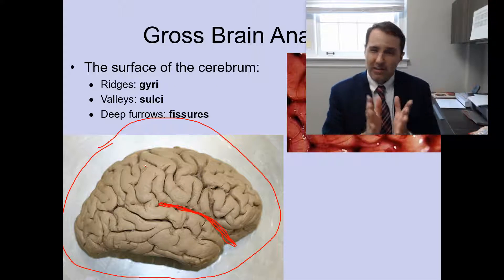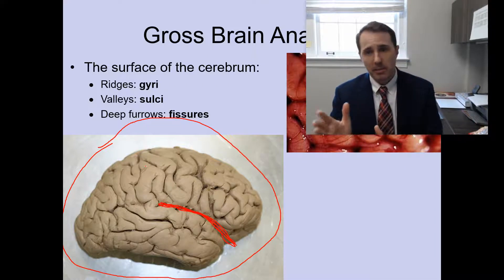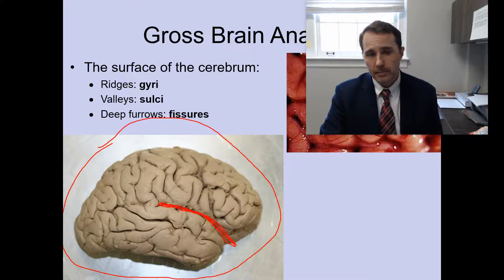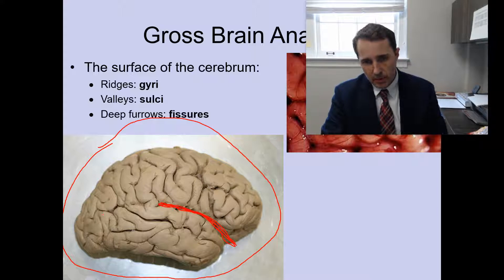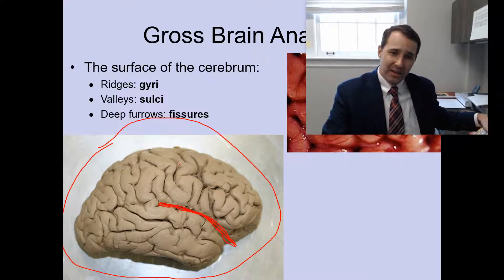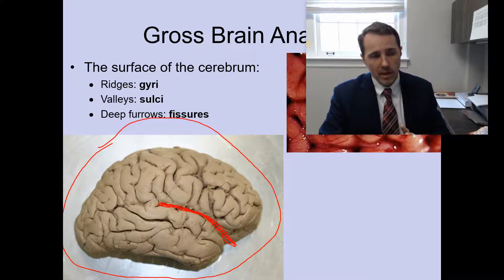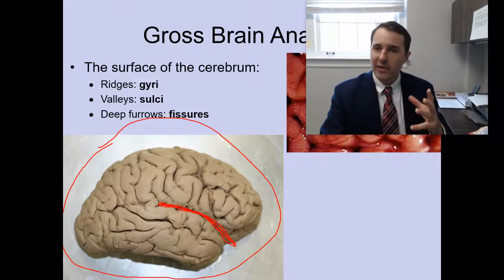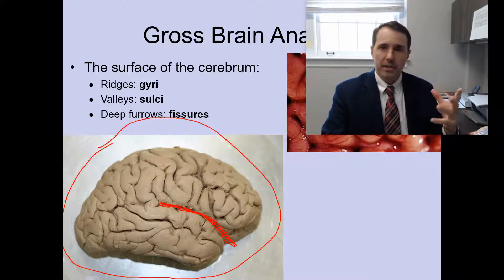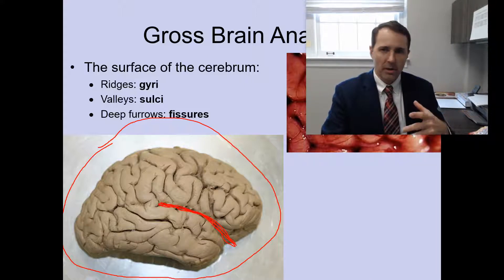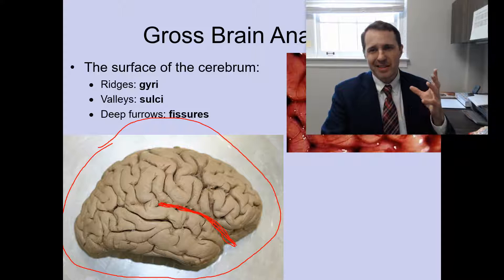Sulci are the valleys — sulci is plural, sulcus is singular. And when you look at the surface of the brain, the tissue on the surface is known as the cortex. The cortex is where all our very high-level cognition, sensory processing, and motor processing takes place.